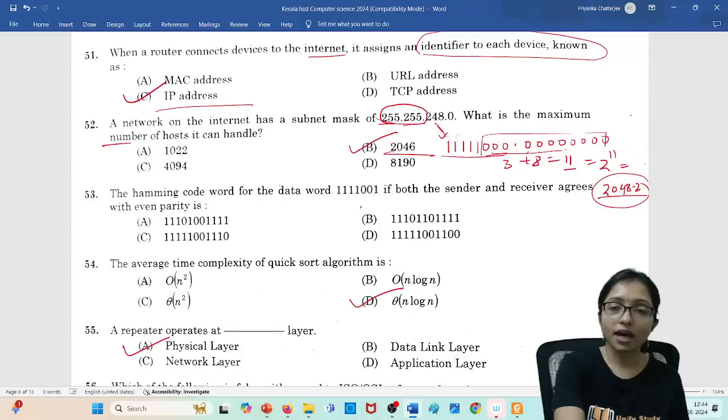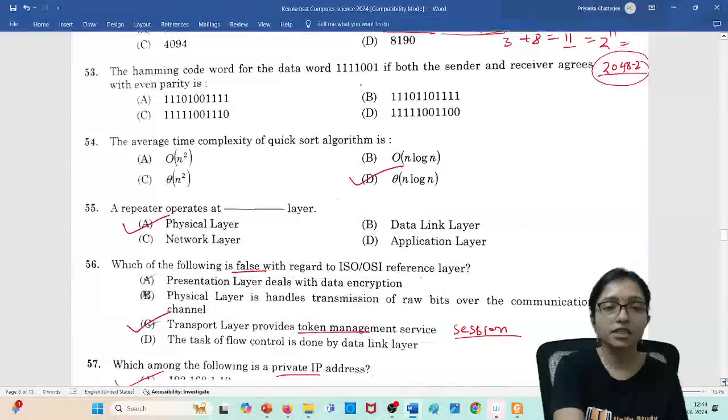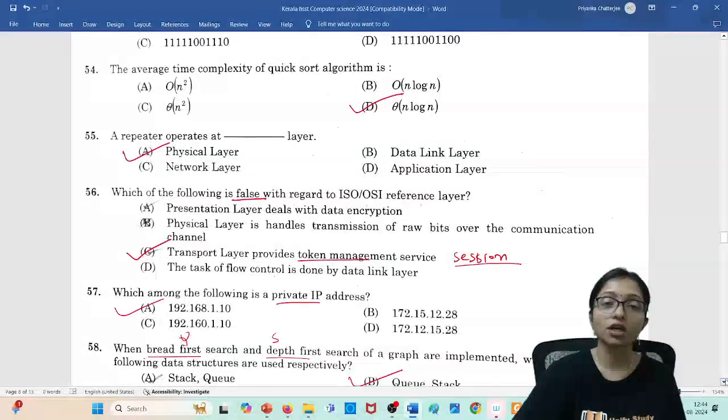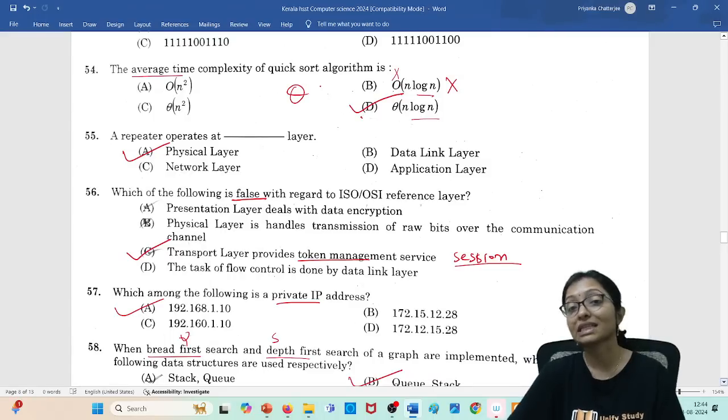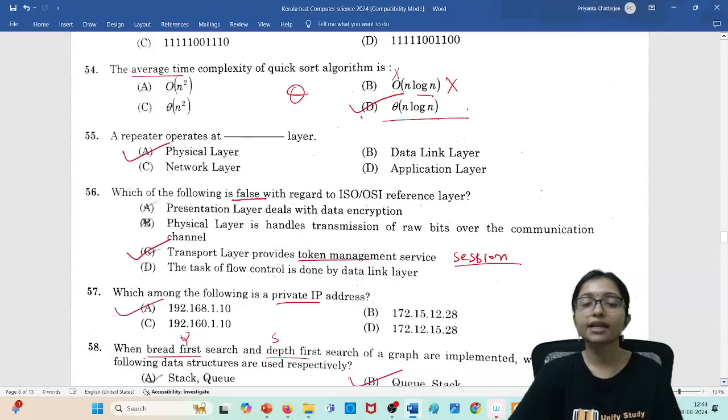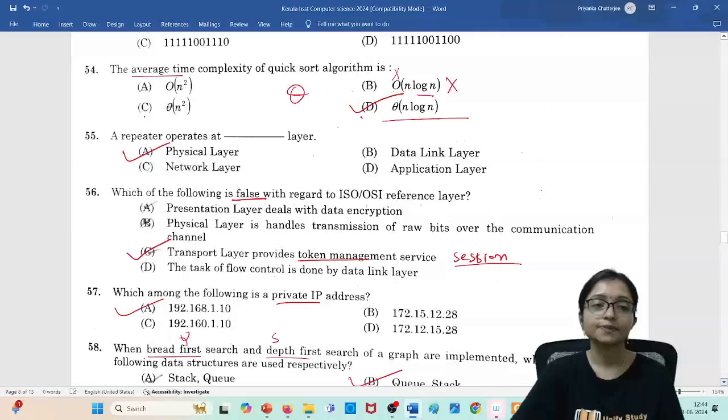The average time complexity for quick sort. Here most of you will do mistake with this one because n log n we all know, but big O will not be there. Because as it is given average case and both options are given, so always the preference should be with theta. So it should be theta(n log n). This is the correct answer.